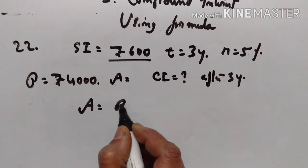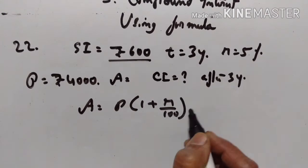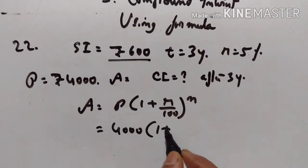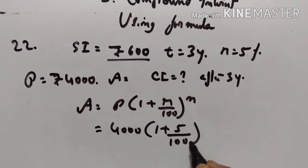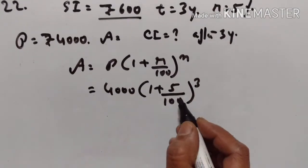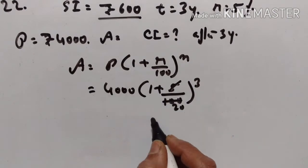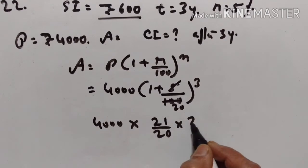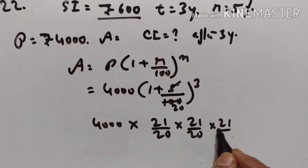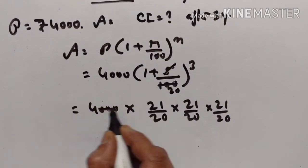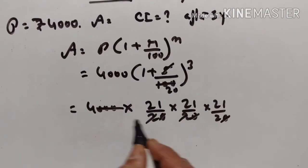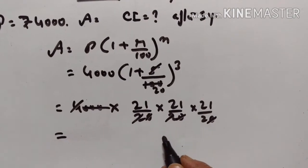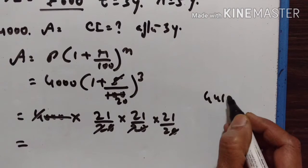Now, A is equal to P into 1 plus R upon 100 raised to the power of N. P is equal to 4000, 1 plus rate is equal to 5%, number of years is equal to 3. This gives 1 plus 5 upon 100, which is 21 upon 20. So, 4000 into 21 upon 20 into 21 upon 20 into 21 upon 20. Three zeros go off, giving 21 cube upon 2. 21 cube is equal to 21 squared into 21, which is 441 into 21.